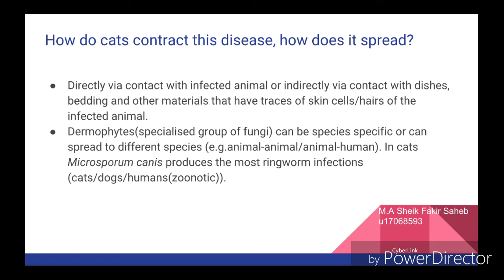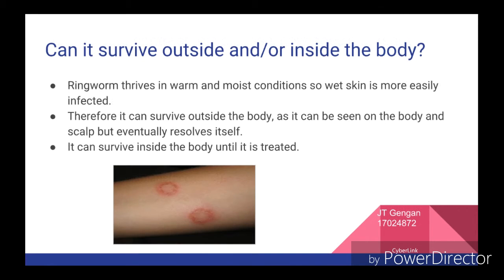How do cats contract this disease? How does it spread? Cats can get ringworm directly through contact with an animal, or indirectly through contact with bedding, dishes and other materials that have been contaminated with the skin cells or hairs of infected animals. It can be species-specific or can spread to different species as well. My name is Jerome and my question was: can it survive outside and/or inside the body? Yes, it can survive outside the body as ringworm thrives in warm and moist conditions, so wet skin is more easily infected.